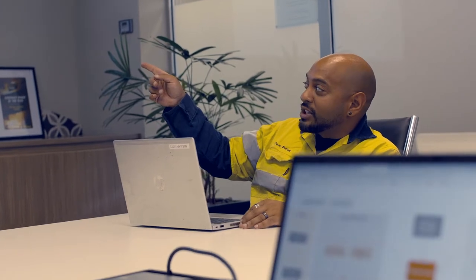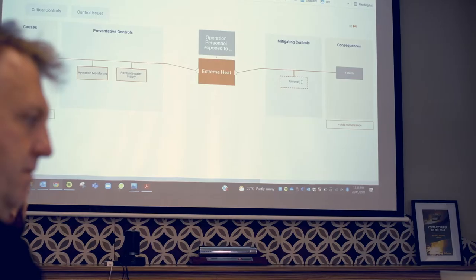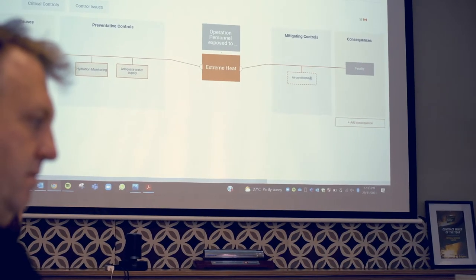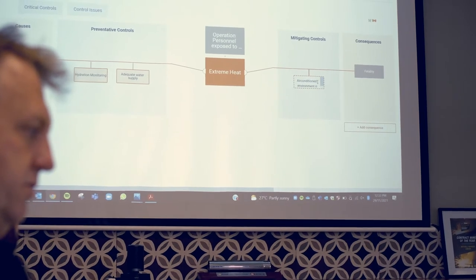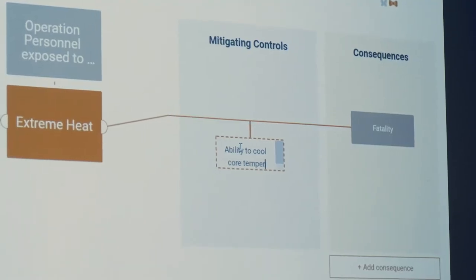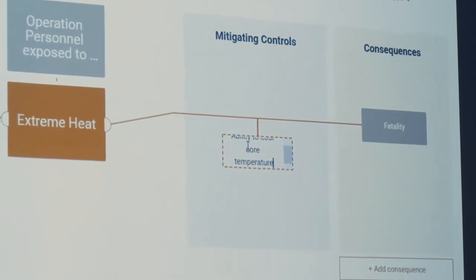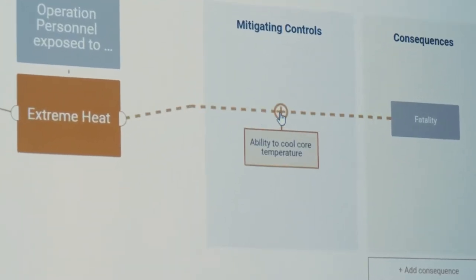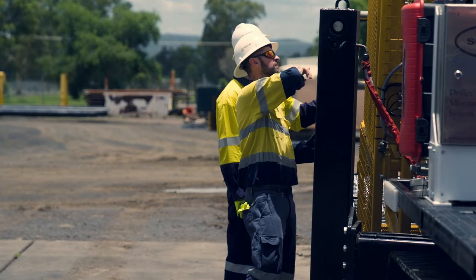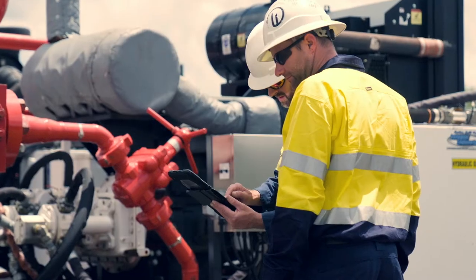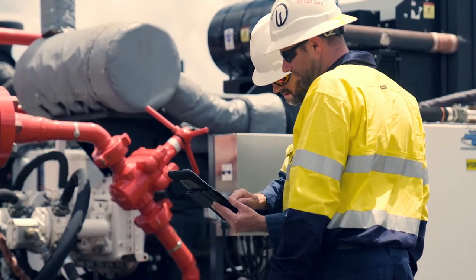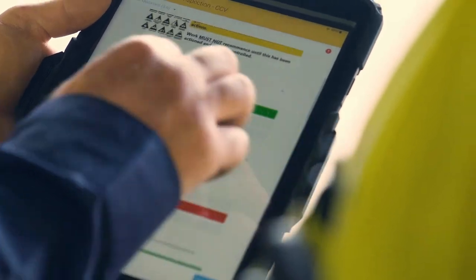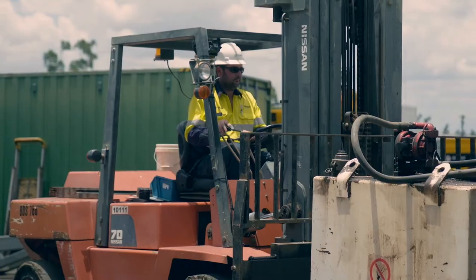If you want to have a look at what's happening behind the diagram, we can first easily build it through the bowtie itself, and this will create all the correct forms back in the module that we can fill in afterwards, rather than creating forms one by one. This makes it super efficient for you to complete a working active bowtie diagram.